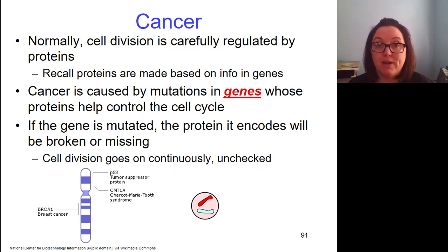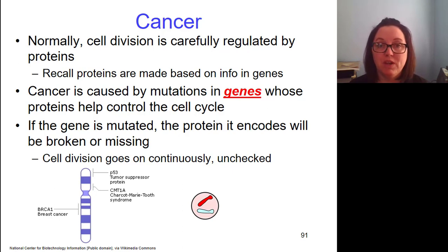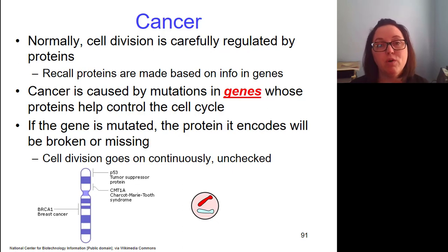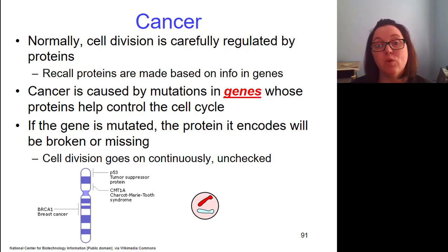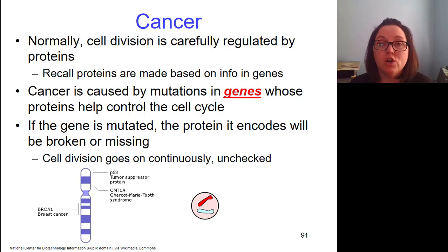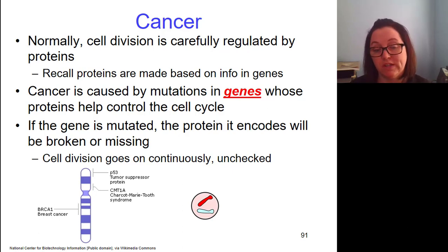Normally cell division, also known as mitosis, is very carefully regulated by proteins. The problem of cancer comes into play when the proteins that are supposed to be regulating cell division are not working or are missing. Proteins are coded for by genes, so if we have mutations in the genes for the proteins that regulate cell division, that's how we get cancer. When the genes for these regulatory proteins are mutated, cell division can occur even when it should not, and then it goes on unrestrained and unchecked, resulting in cancer.